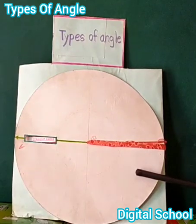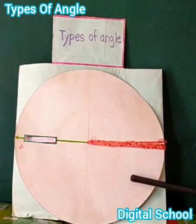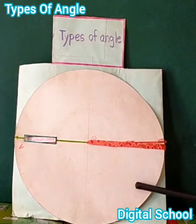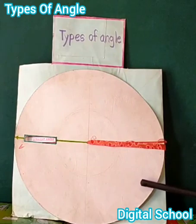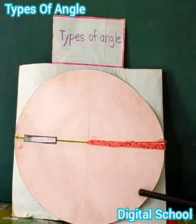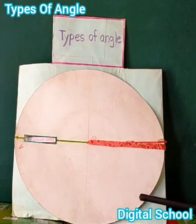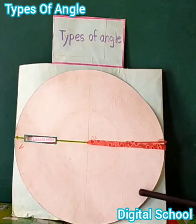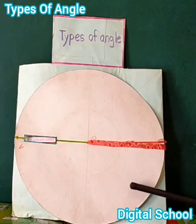Assalamu alaikum, I am Shifa. Today we will learn about types of angle. Dear friends, look at the board. This is a straight angle. The definition of straight angle: an angle that measures 180 degrees is called a straight angle. In the figure, ABC is called a straight angle. Thank you.